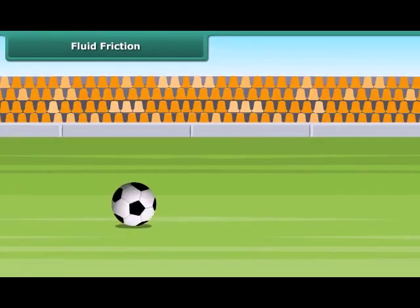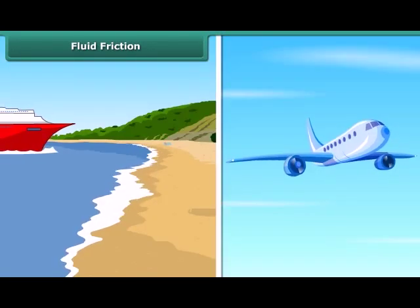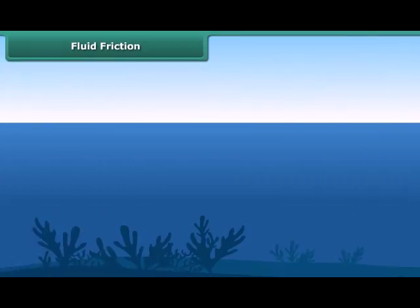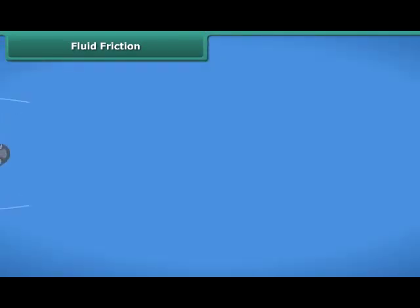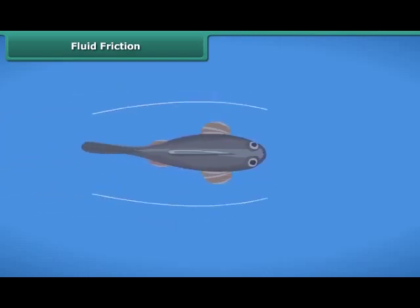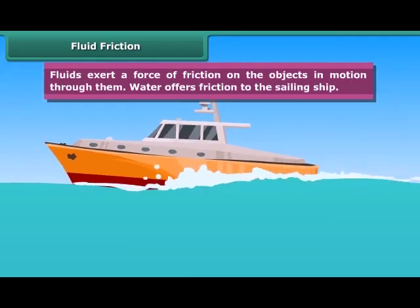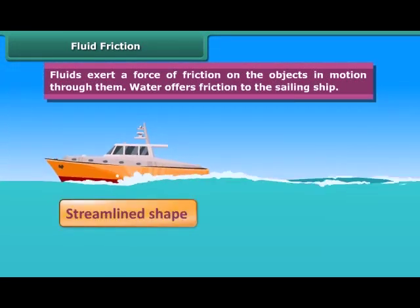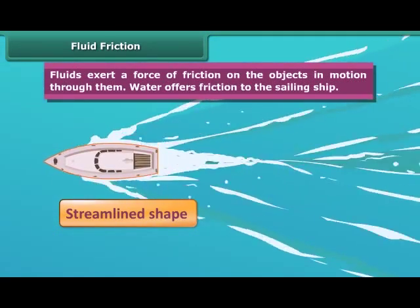It is not only the ground which offers force of friction on a body moving along its surface — even water and air exert frictional force. In science, the common name for gases and liquids is fluids. The streamlined shape of fish helps them reduce the force of friction between their body and the water through which they move. Boats and ships are narrow in front and sloping on the sides — this is known as a streamlined shape. Streamlined shape reduces friction from the fluid medium through which these objects move.